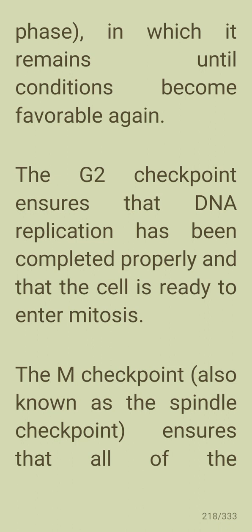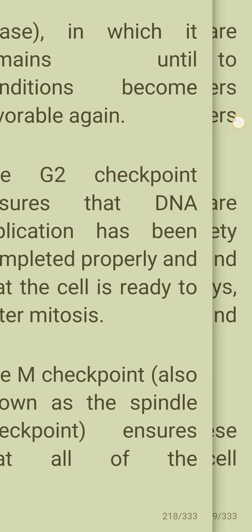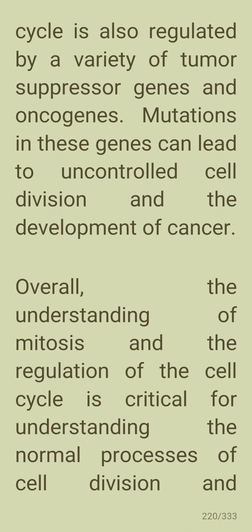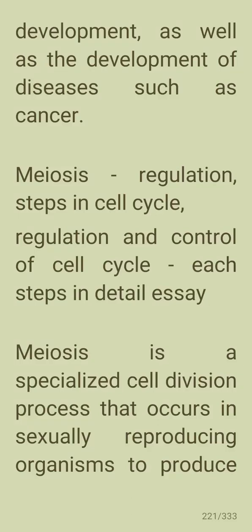The M checkpoint, also known as the spindle checkpoint, ensures that all chromosomes are properly attached to the spindle fibers before the cell enters anaphase. These checkpoints are regulated by a variety of proteins and signaling pathways, including cyclins and cyclin-dependent kinases. The cell cycle is also regulated by tumor suppressor genes; mutations in these genes can lead to uncontrolled cell division and cancer. Understanding mitosis and cell cycle regulation is critical for understanding normal development as well as diseases such as cancer.